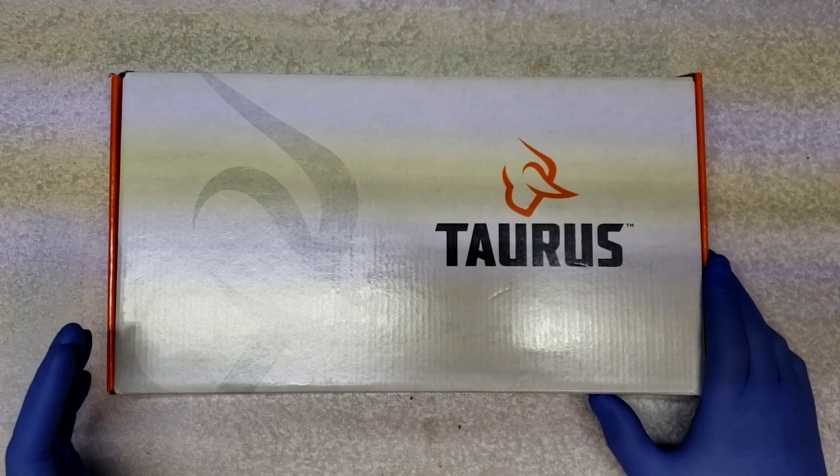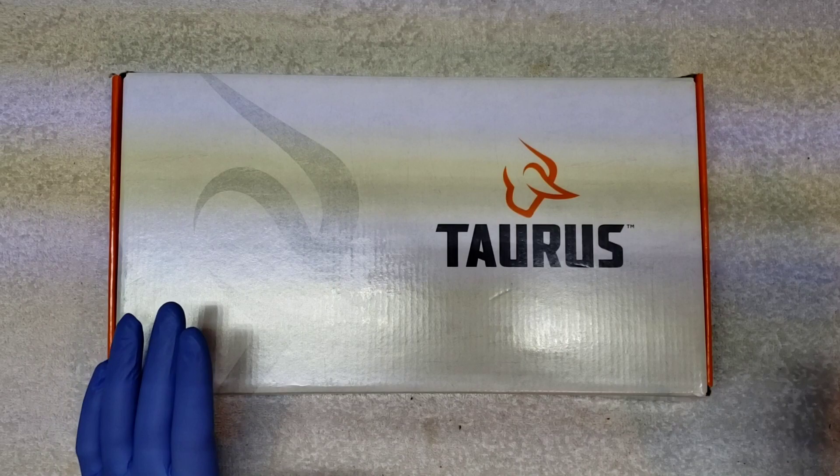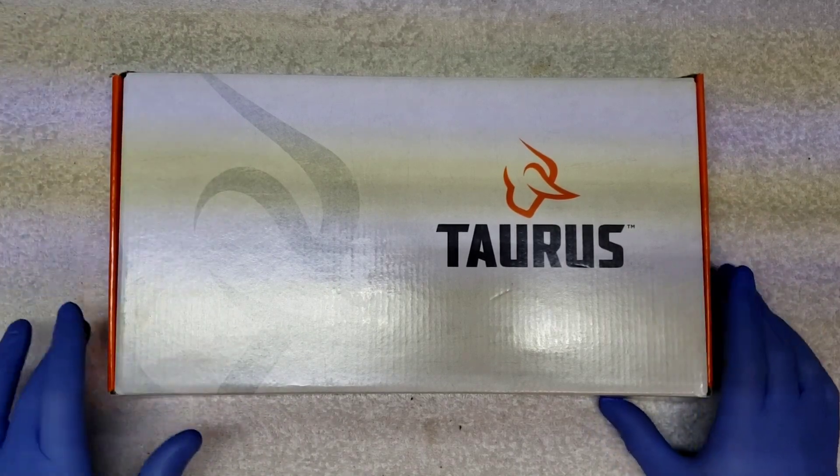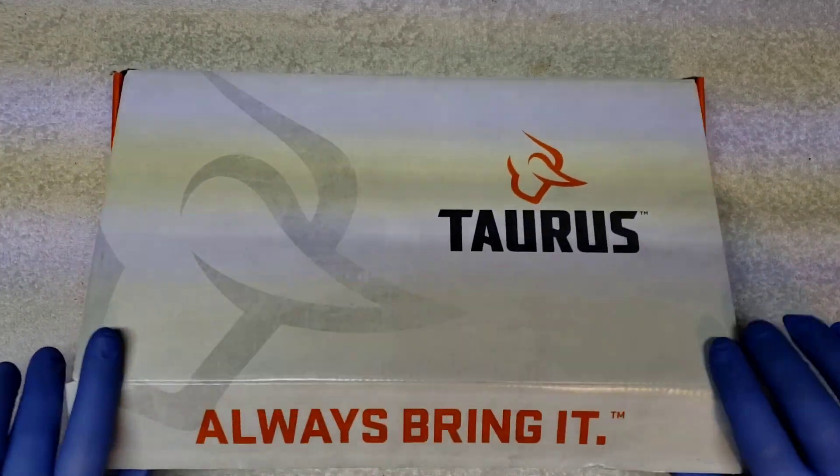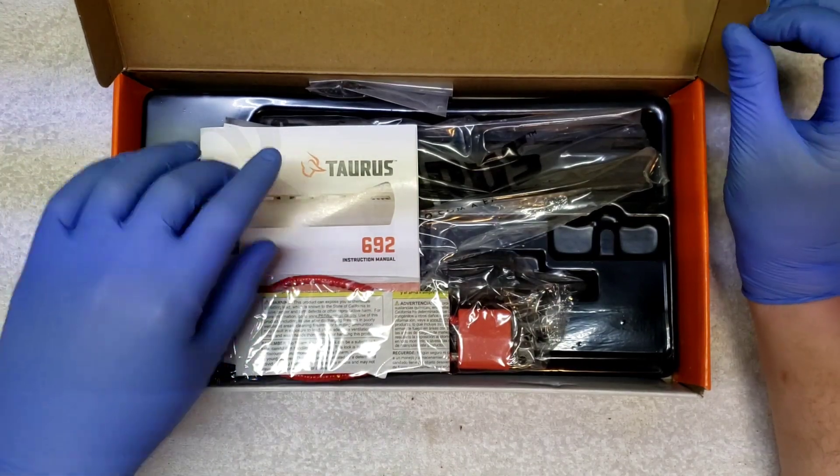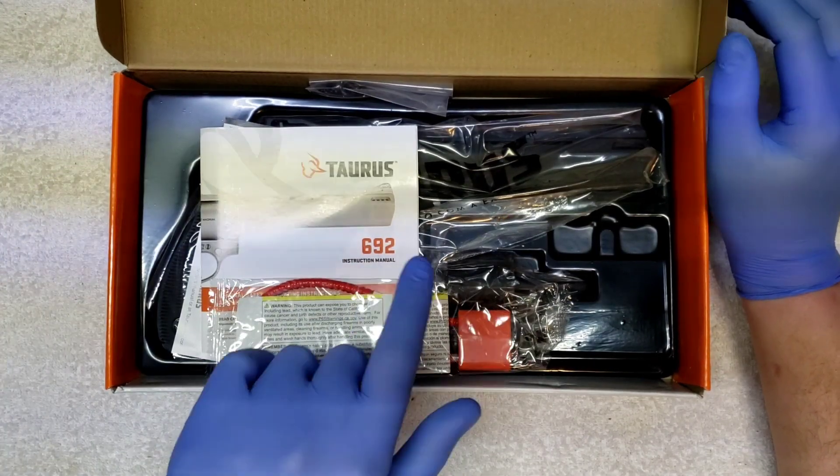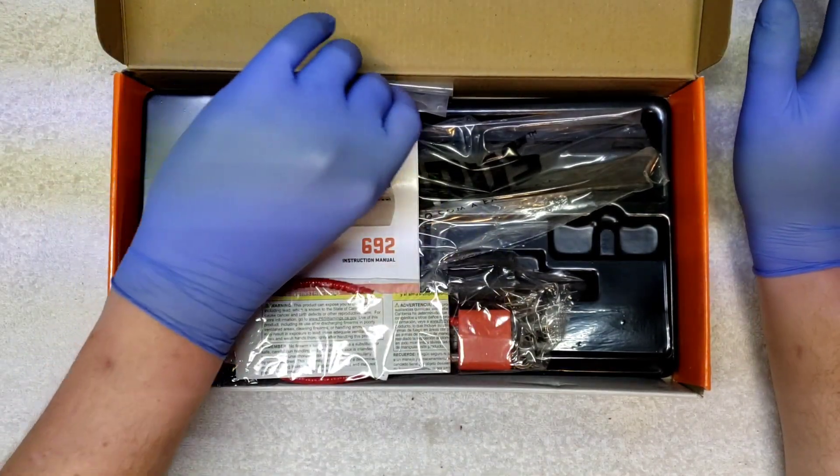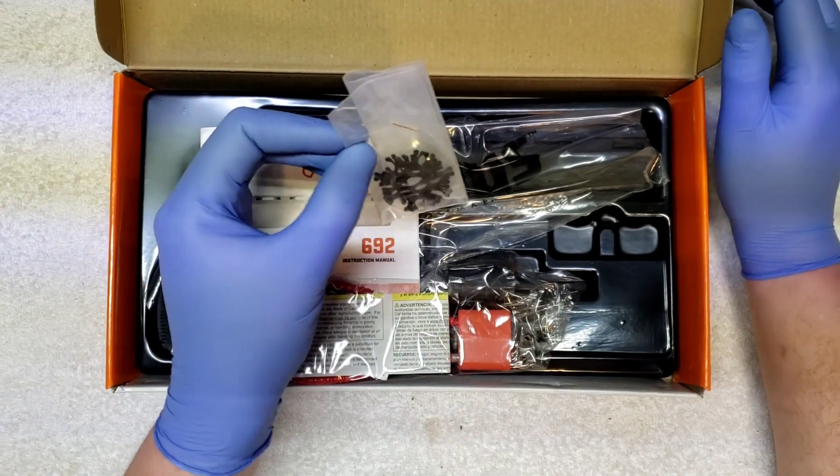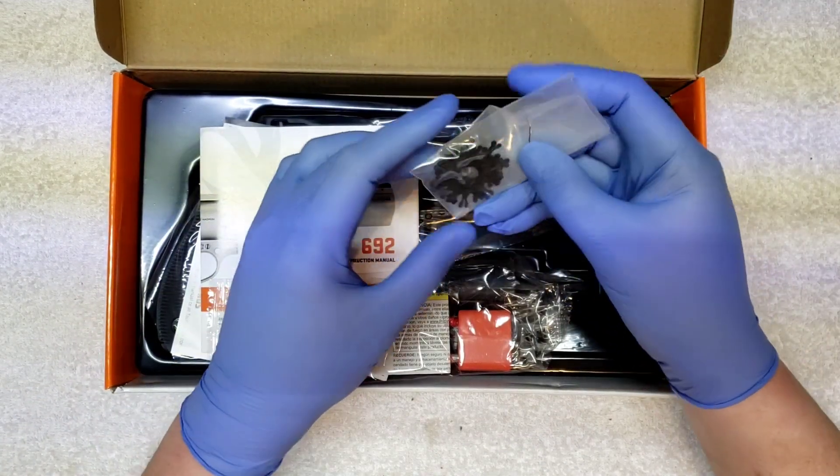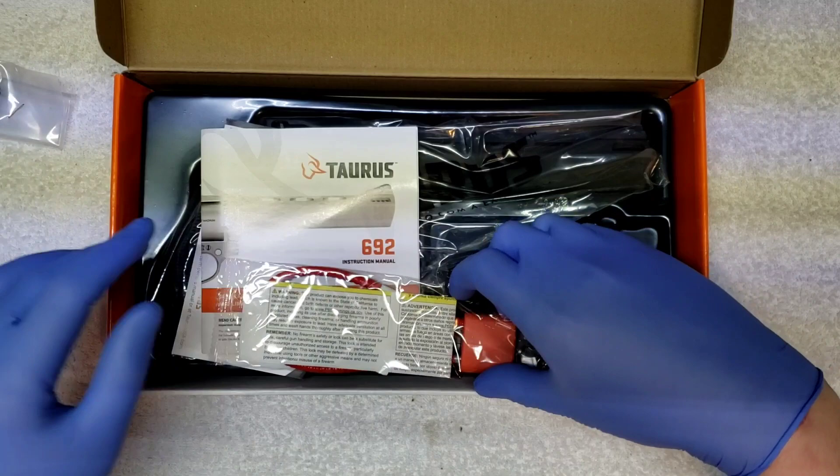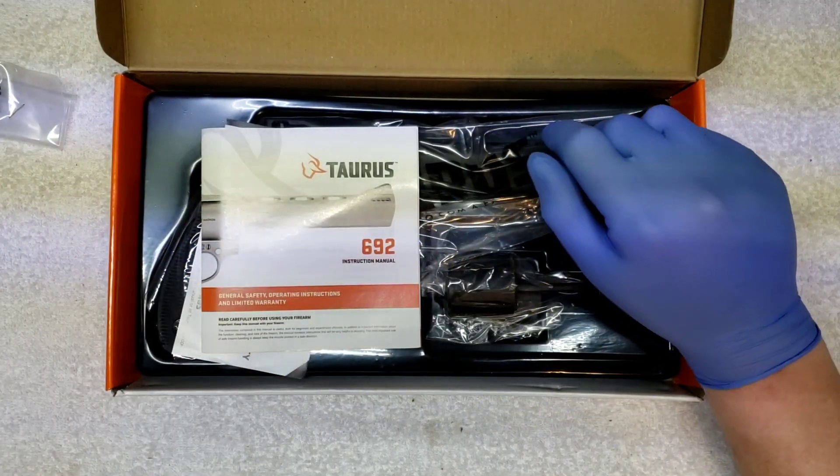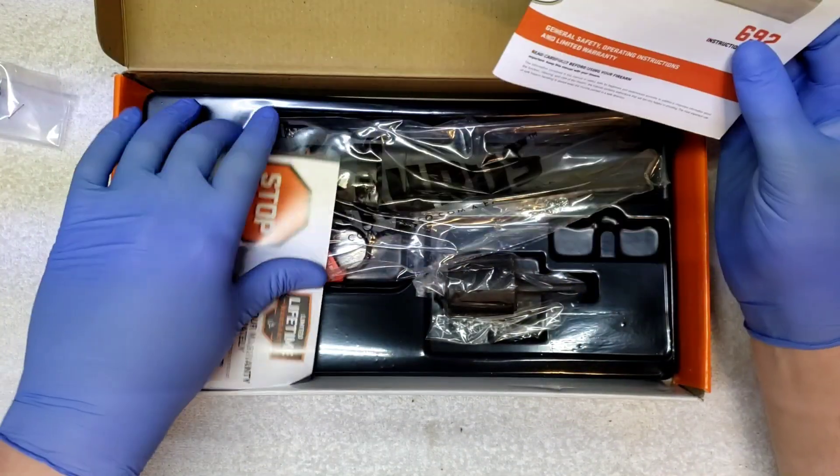Salutations people of the internet, this is just going to be an unboxing and first look at this gun. Haven't had this one yet, this is a new one, the Taurus 692. Well I didn't think it came with moon clips but apparently it does. Okay, so you got your lock, you got your manual, lifetime warranty.